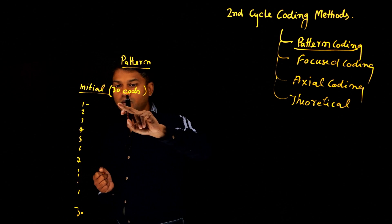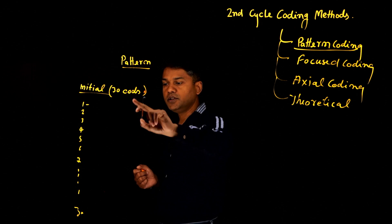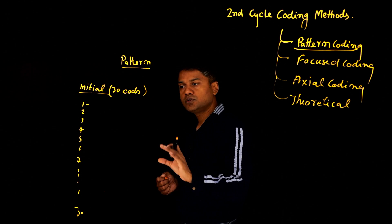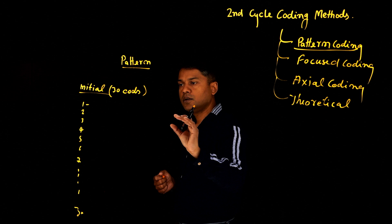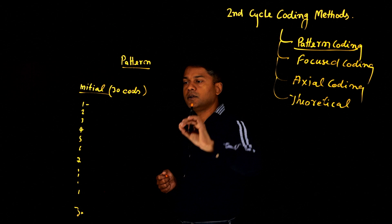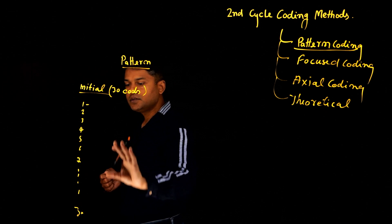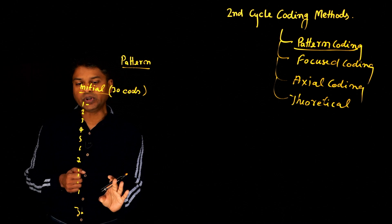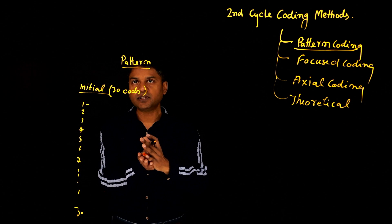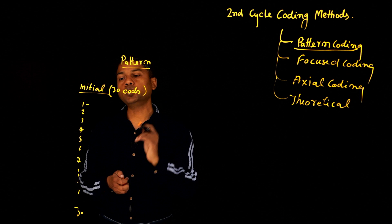So what do you do? You look at all the codes, initial codes, and see if some of the codes are showing one pattern. And then you can group these codes together. Or how these various codes are maybe some showing some relationship with each other, which can be grouped together. So that's what you do in the pattern coding method.